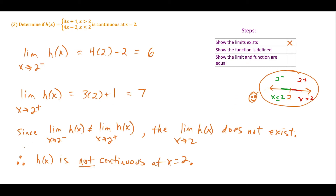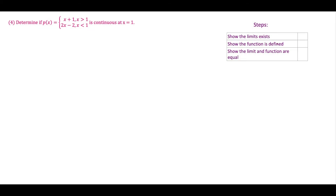A quick note: these three dots mean 'therefore' — a useful abbreviation when writing math explanations. For the fourth question, there's a trap here. Looking at this function right away, it is not continuous at x equals 1 because the function is not defined there. For this piecewise function, we only have intervals for x greater than 1 and x less than 1 — none of them include equals. So since p of 1 is undefined, p of x is not continuous at x equals 1.